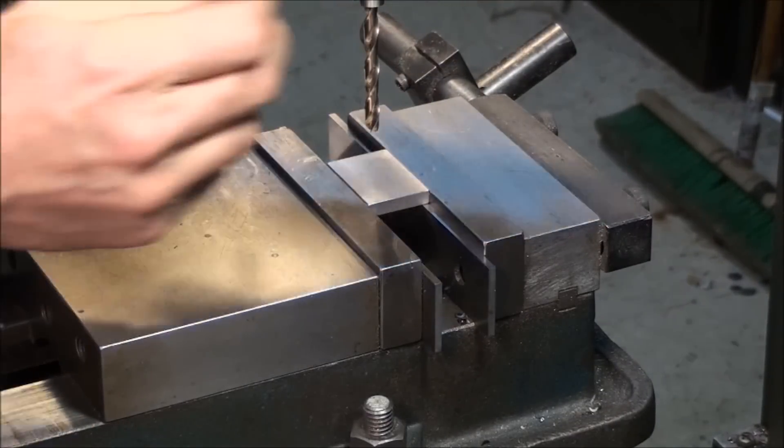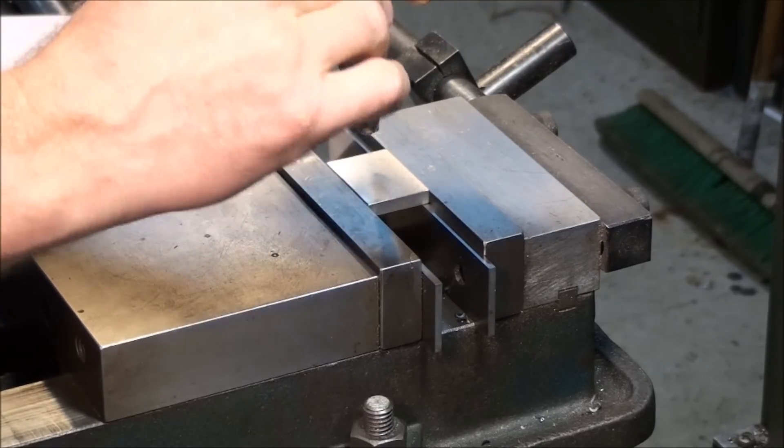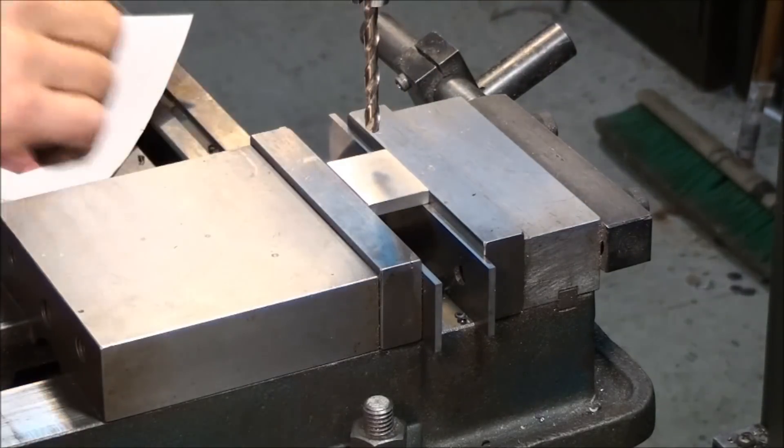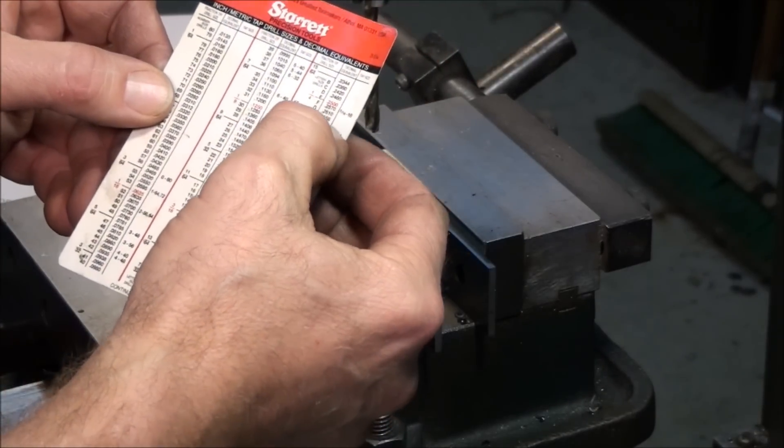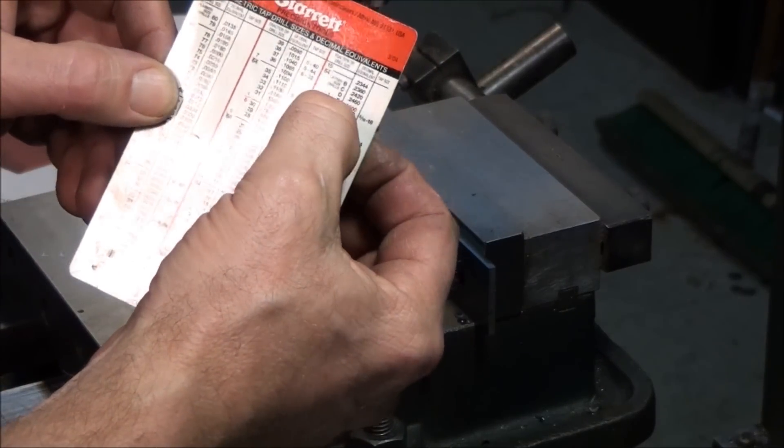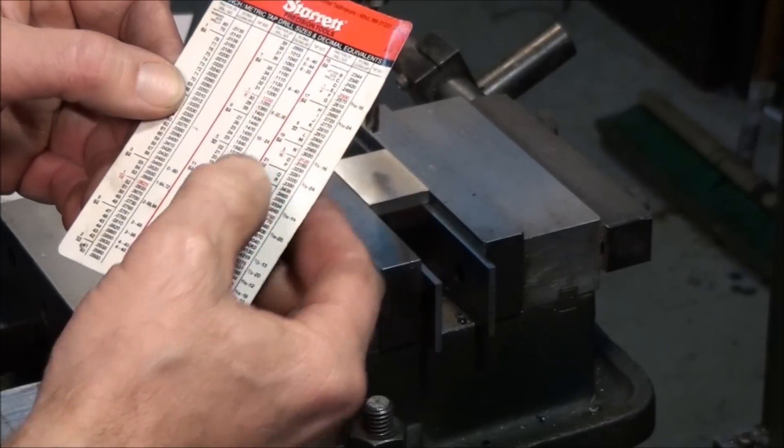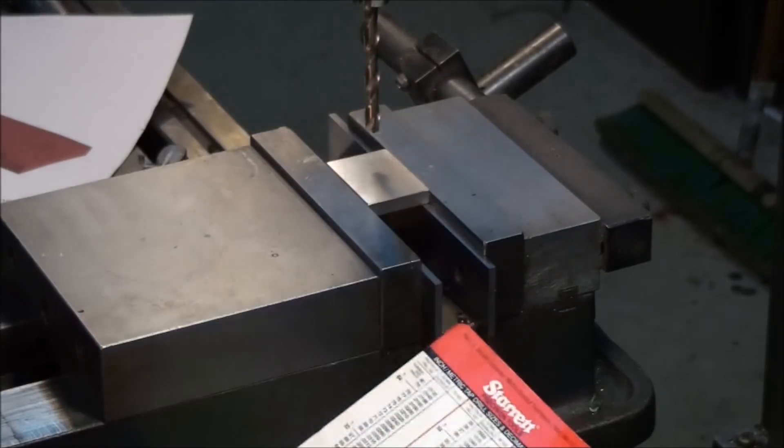Now this is a letter F drill. You look up on your tap chart, tap and drill, tap drill chart. You'll see a 5/16-18 tap takes a letter F, 0.257 diameter. That gives you 75% thread.